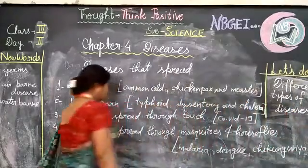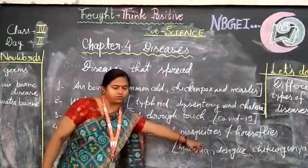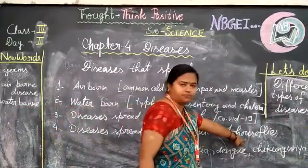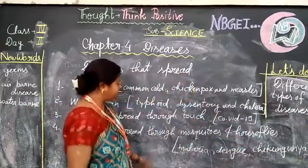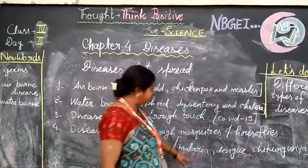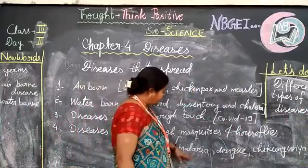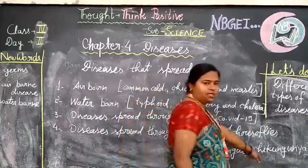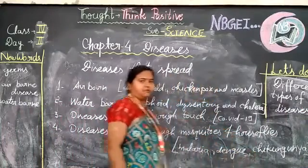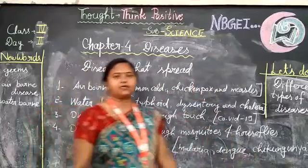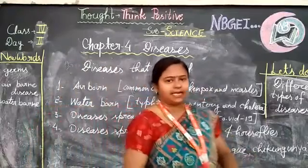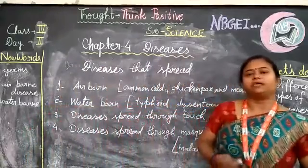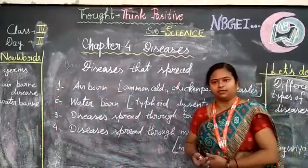Diseases also spread from mosquitoes or houseflies. These diseases include malaria and chicken pox. Some diseases are of a type that do not spread from one person to another.